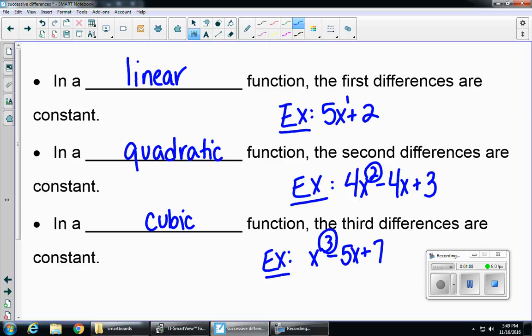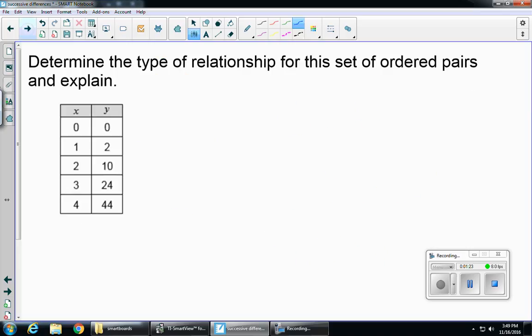So whatever differences are constant will tell you what type of function it is. For example, if we had the tenth differences that were constant, it would be an equation that had an x to the tenth. So let's take a look at how we find them.